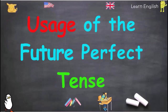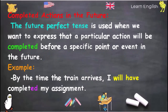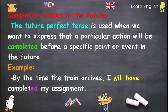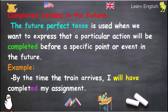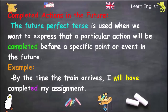Usage of the Future Perfect Tense. Completed Actions in the Future: The Future Perfect Tense is used when we want to express that a particular action will be completed before a specific point or event in the future. Example: 'By the time the train arrives, I will have completed my assignment.'